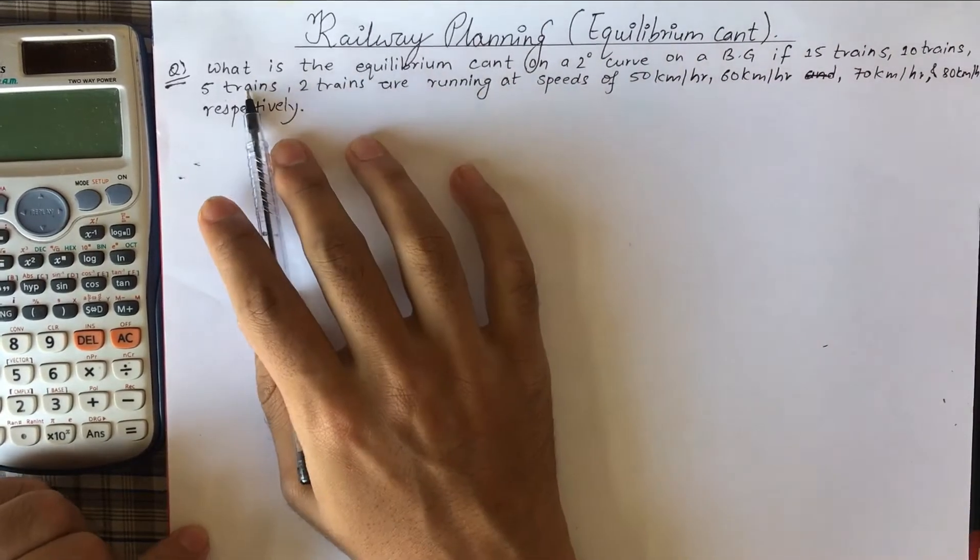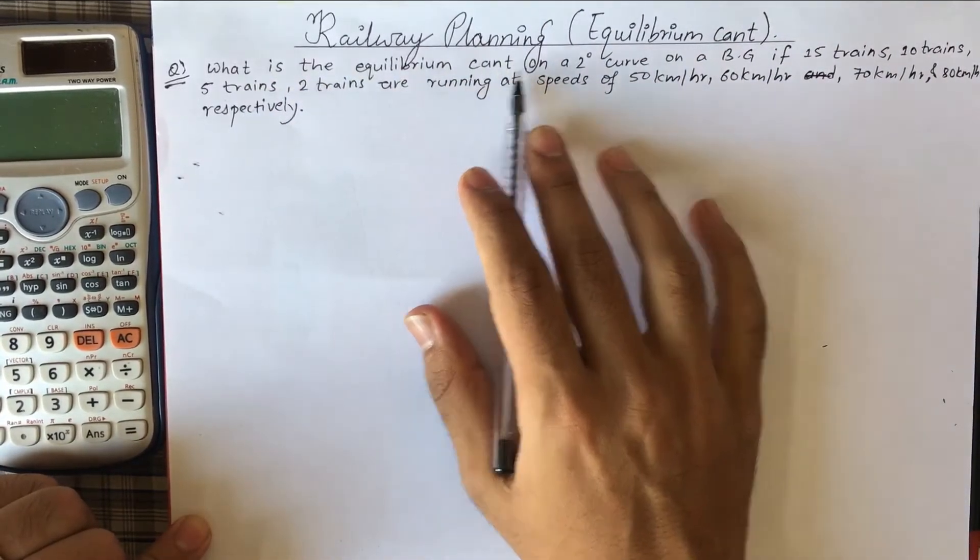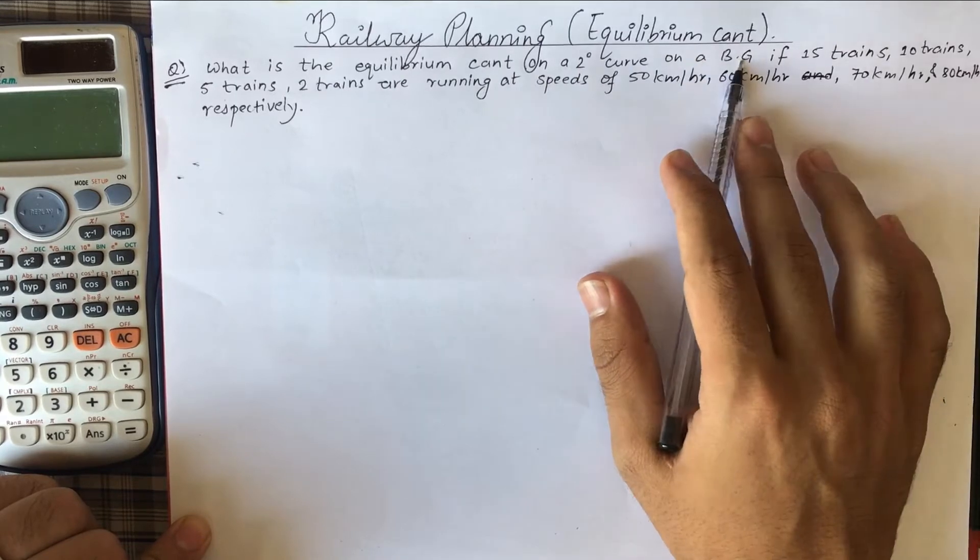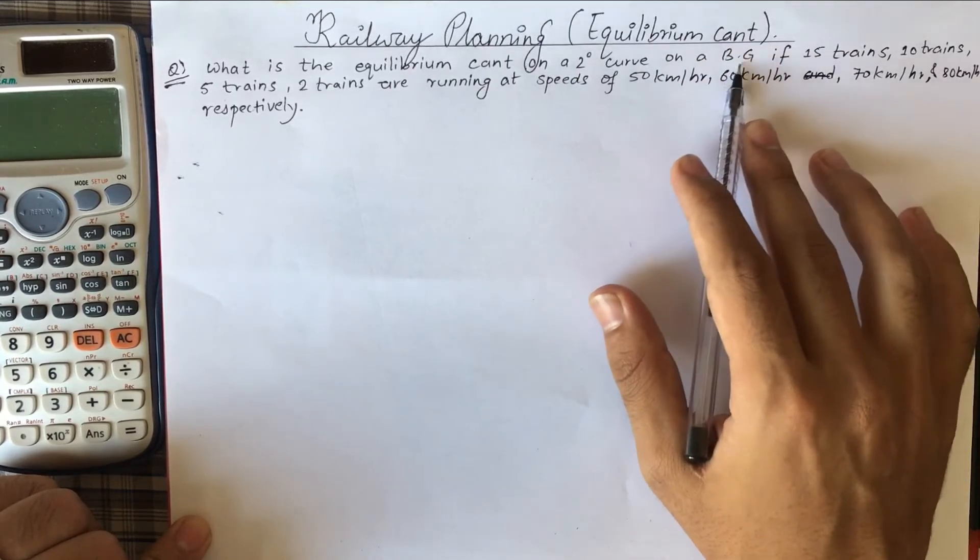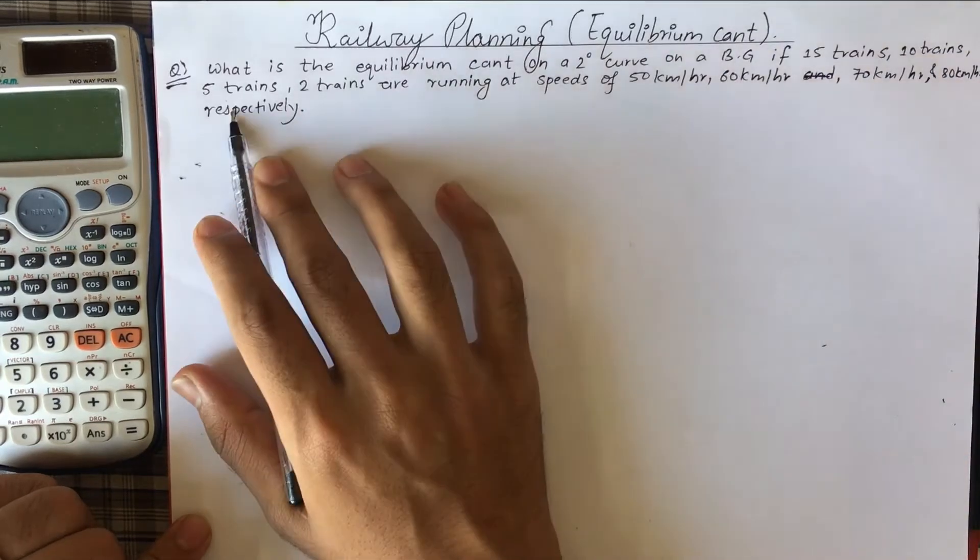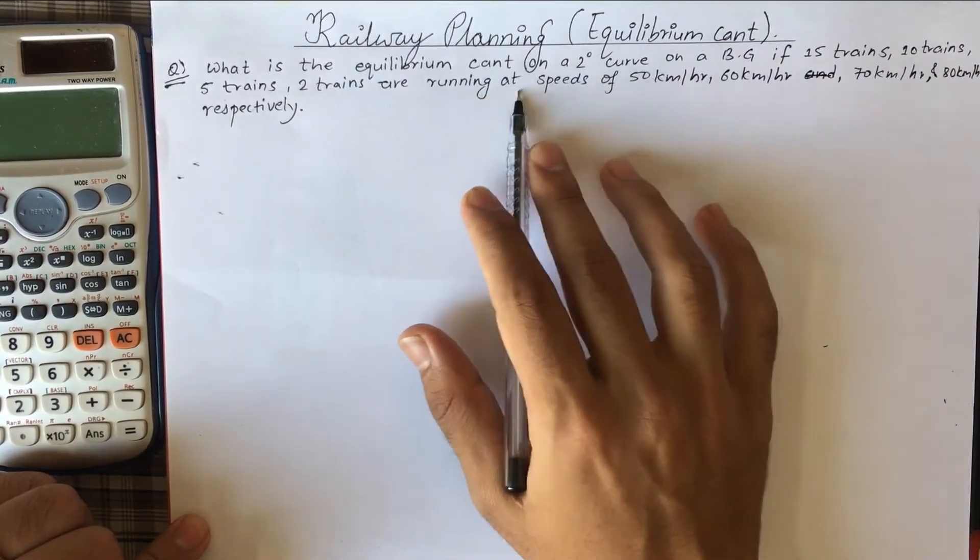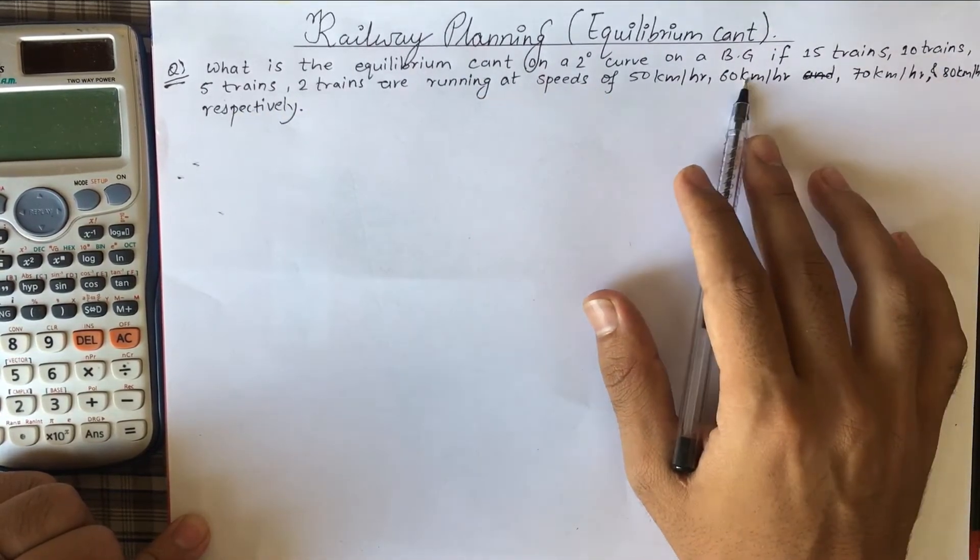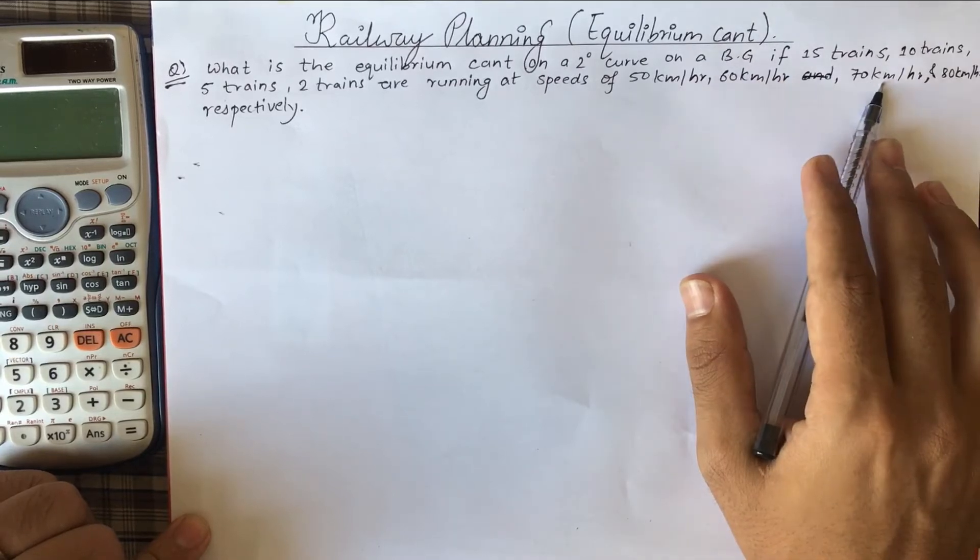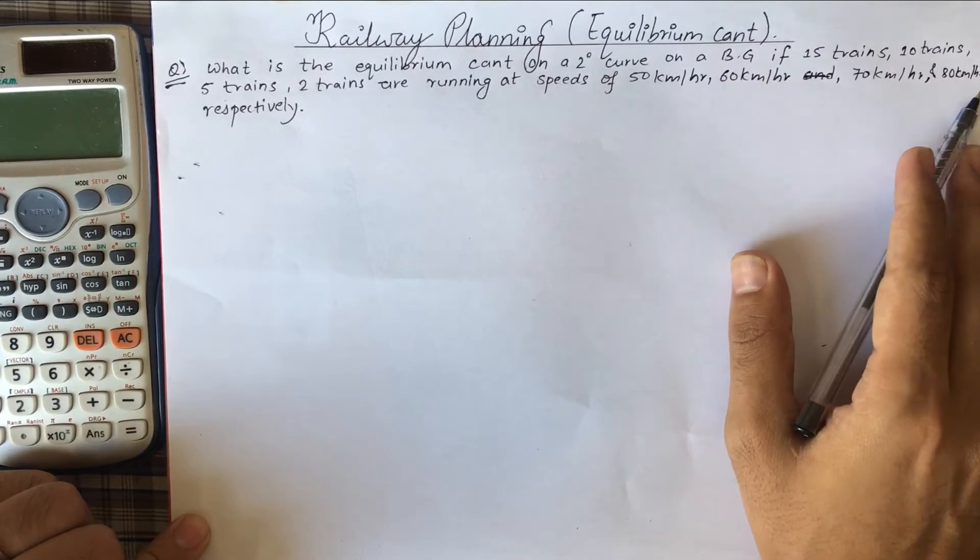Let's first read the question. What is the equilibrium cant on a two degree curve on a BG, BG means broad gauge, if 15 trains, 10 trains, 5 trains, 2 trains are running at speeds of 50 kilometer per hour, 60 kilometer per hour, 70 kilometer per hour and 80 kilometer per hour respectively.